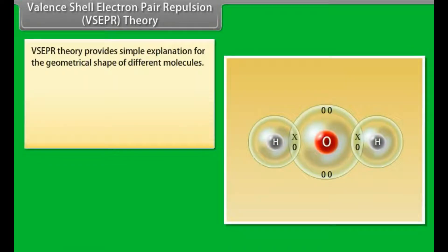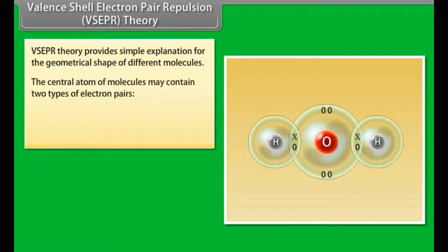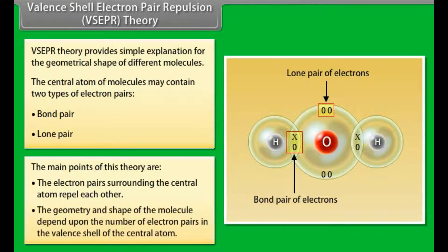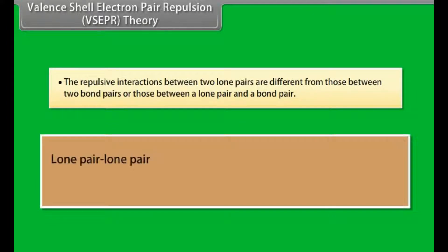Valence Shell Electron Pair Repulsion (VSEPR) Theory provides a simple explanation for the geometrical shape of different molecules. The central atom of molecules may contain two types of electron pairs: bond pair and lone pair. The electron pairs surrounding the central atom repel each other. The geometry and shape of the molecule depend upon the number of electron pairs in the valence shell of the central atom. The repulsive interactions between two lone pairs are different from those between two bond pairs or between a lone pair and a bond pair.